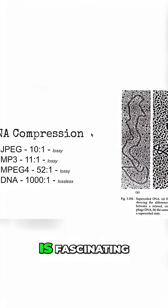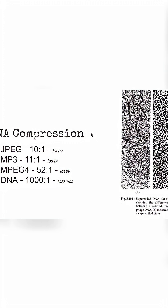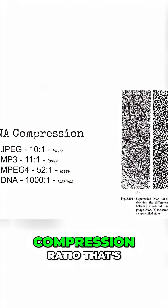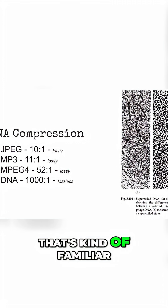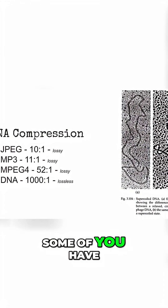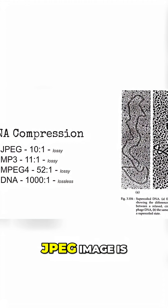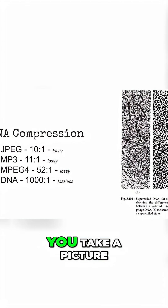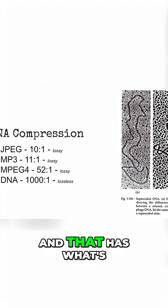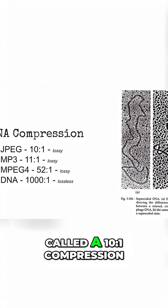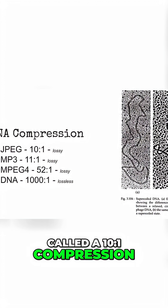DNA is fascinating, and it has a compression ratio that's kind of familiar. Some of you have heard of what a JPEG image is. You take a picture, you send someone a JPEG, and that has what's called a 10 to 1 compression.